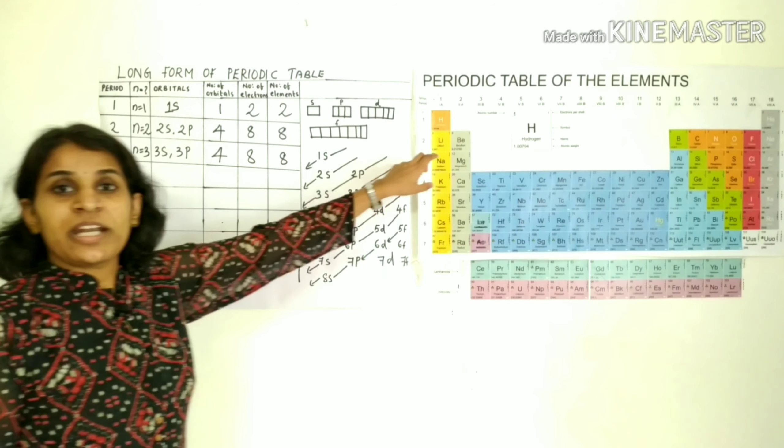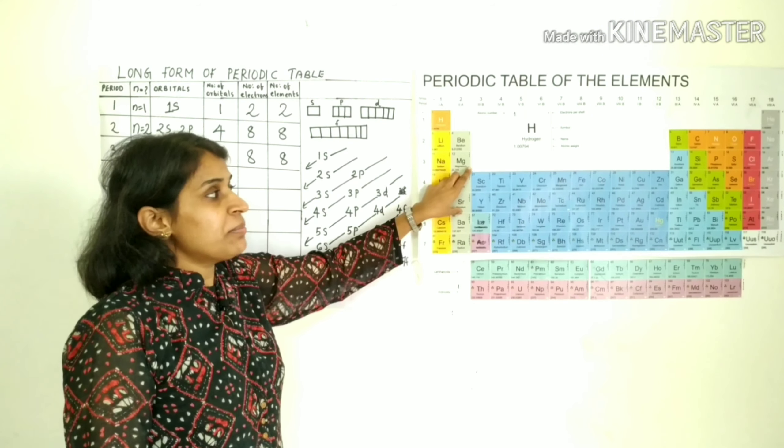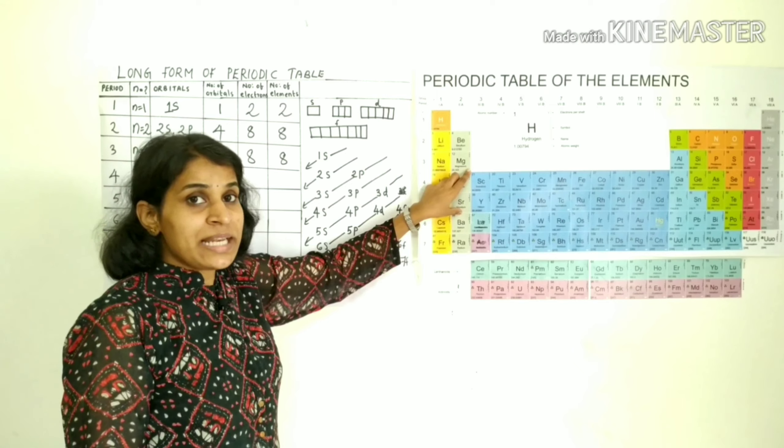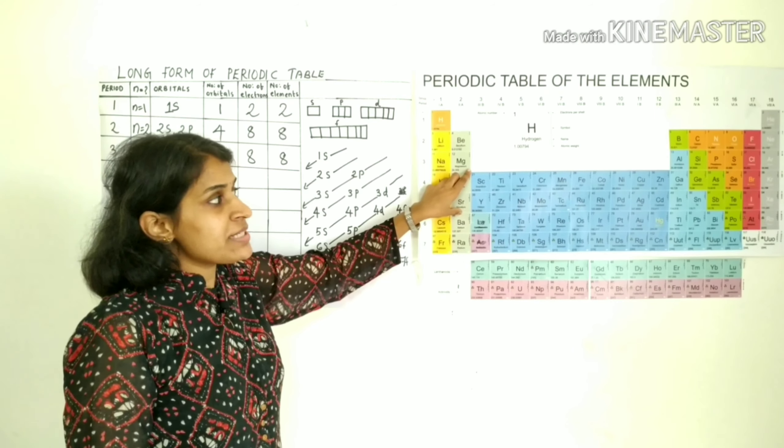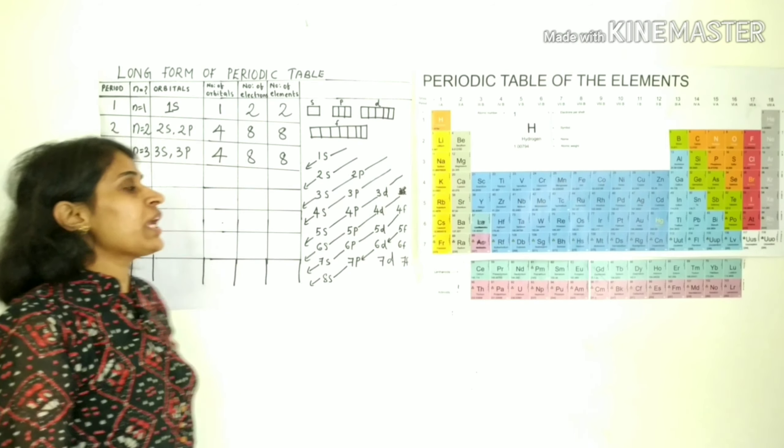The third period elements are sodium, magnesium, aluminum, silicon, phosphorus, sulfur, chlorine, and argon.